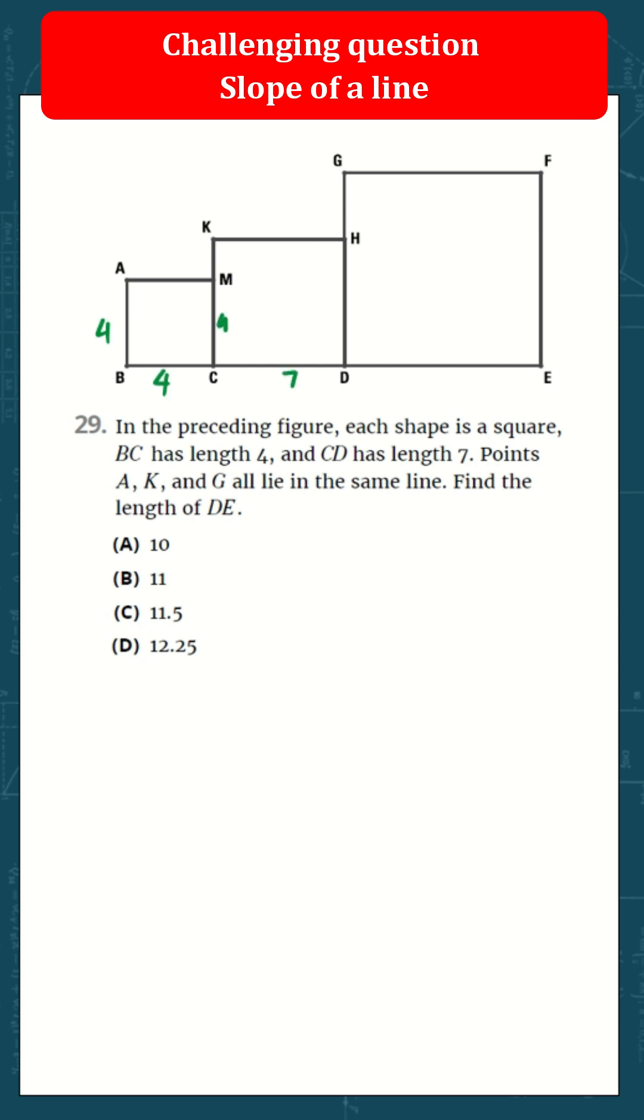So this will be 4, this will be 3, this will be 7, and the points A, K, and G all lie on the same line. Find the length of DE.